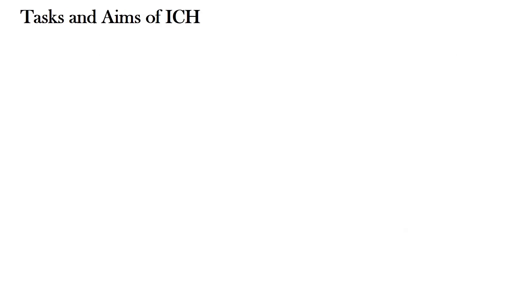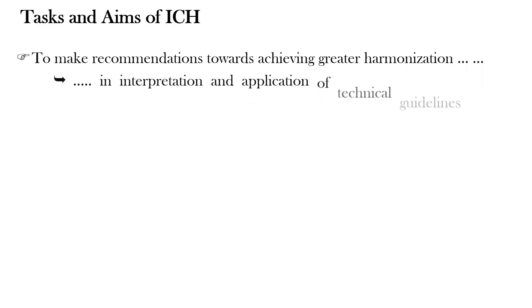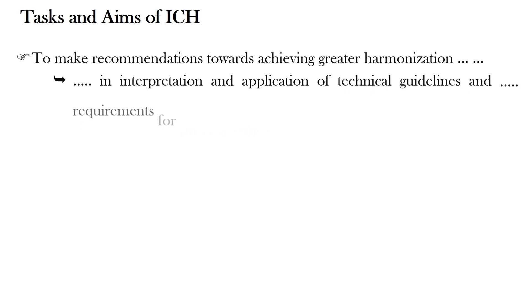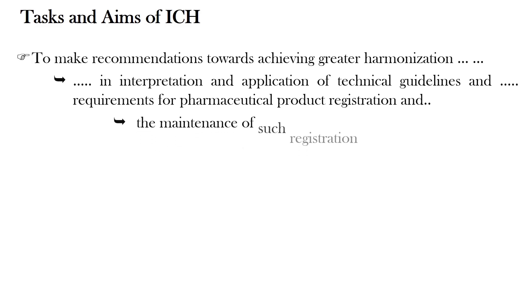Coming to the tasks and aims of ICH. ICH has two tasks or aims. The first one is to make recommendations toward achieving greater harmonization in interpretation and application of technical guidelines and requirements for pharmaceutical product registration and the maintenance of such registration.